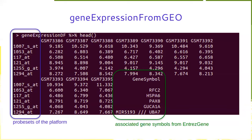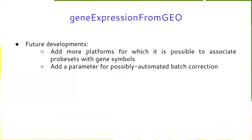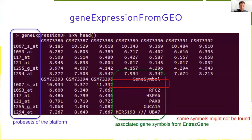For example, probe set '1053_at' was associated with the gene RFC2, the following probe set with gene HSP86, and probe set '1294_at' had gene symbols OR2 found. It's also possible that some gene symbols might not be found — for instance, the first row for probe set '1007_s_at' did not return a gene symbol.